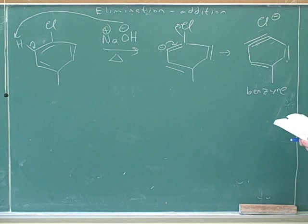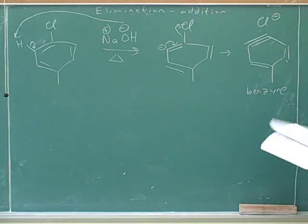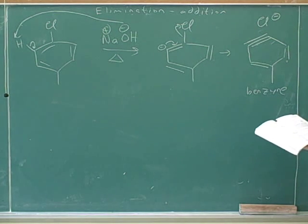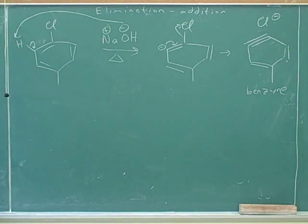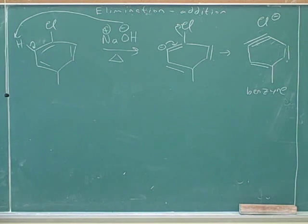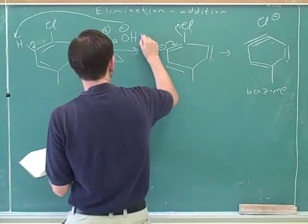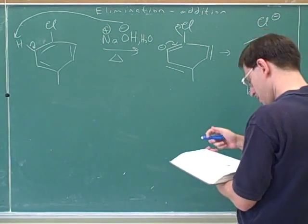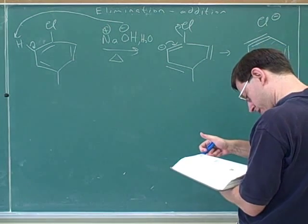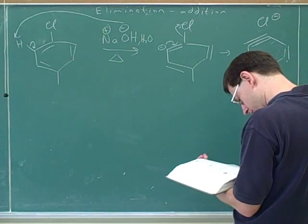Now we need somebody to attack. We could have water or hydroxide attack the benzyne. This would be done in water, so we can have water attack — and you produce water from the OH anyway in the first step.